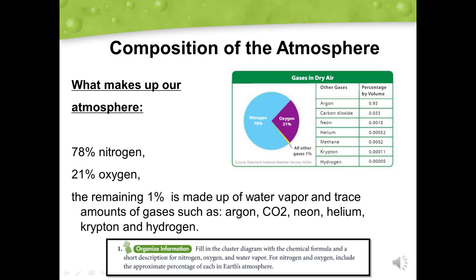Oxygen makes up only about one-fifth of the atmosphere. The most common form is O2 — a molecule made up of two atoms of oxygen. Most living things cannot survive without oxygen. Oxygen is also necessary for combustion, or burning, where it combines chemically with a fuel such as gasoline, wood, or paper, producing carbon dioxide and water. Over Earth's long history, the amount of oxygen has changed. Early Earth's atmosphere contained almost no oxygen — it was mostly carbon dioxide, nitrogen, carbon monoxide, and water vapor. Oxygen built up when tiny photosynthetic microorganisms appeared and released oxygen during photosynthesis.